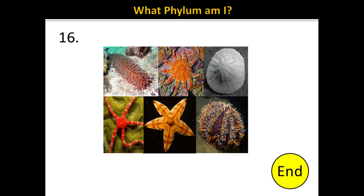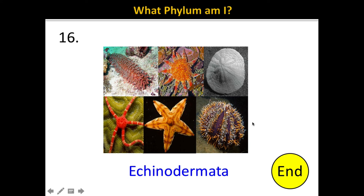Number 16. The correct answer is Echinodermata. Remember, 'echino' means spiny and 'dermata' means skin — one characteristic of this group is that they have spiny skin. They also have five-fold symmetry. Examples of echinoderms include sea cucumbers, starfish, sand dollars, and sea urchins.